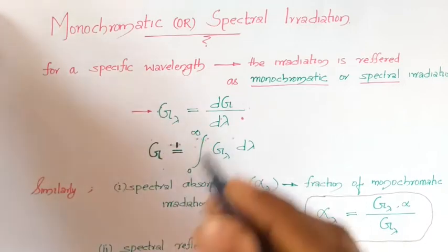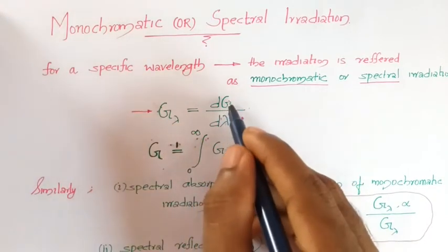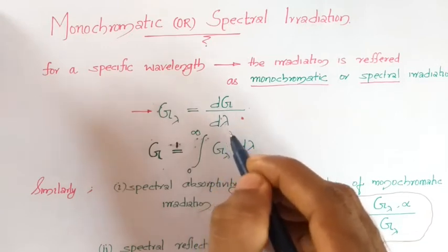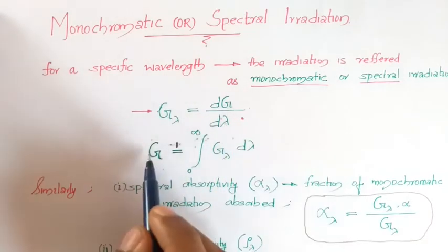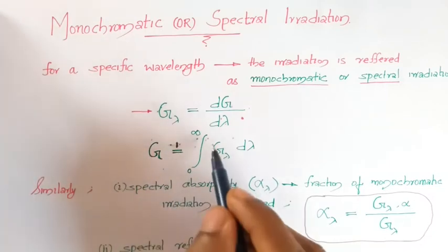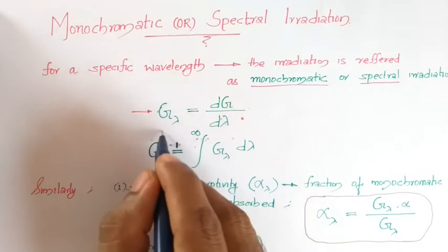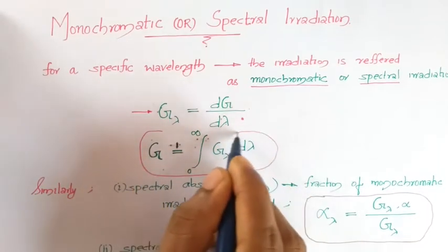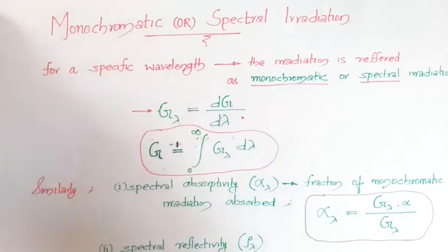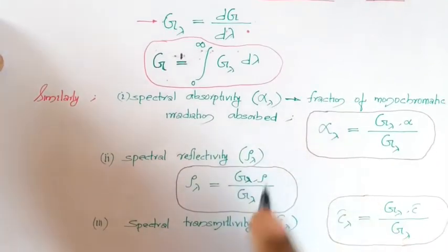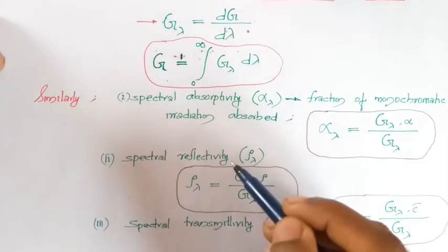Monochromatic or spectral irradiation is designated by the symbol G_lambda. It is defined as dG by d_lambda, so the total irradiation can be found by integrating G_lambda with respect to d_lambda over the entire wavelength: G equals the integral from 0 to infinity of G_lambda d_lambda. This is the relation between total and monochromatic irradiation.